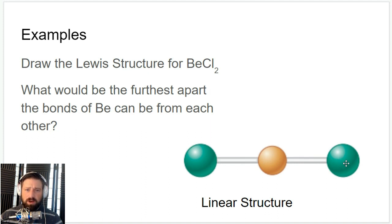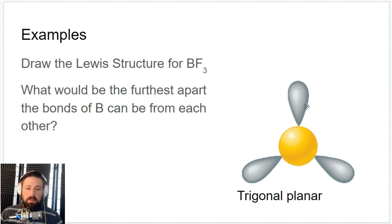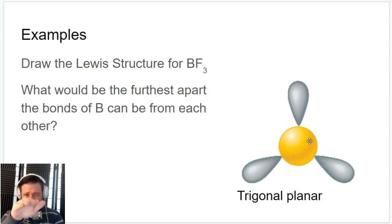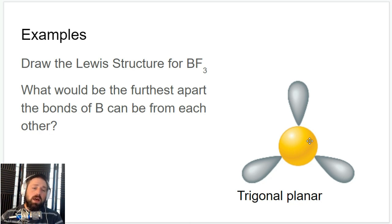If we take boron trifluoride, you have the boron in the center and three fluorines around it. These three groups of electrons, these three bonds, are going to push each other apart as much as possible, and you get a trigonal planar pattern. This is flat — if you looked at it head-on it would be flat — so we say it's planar because it exists all on one plane. It really is a flat, 2D shape.